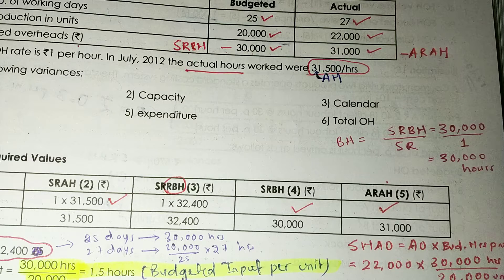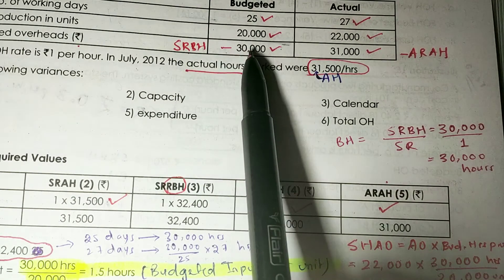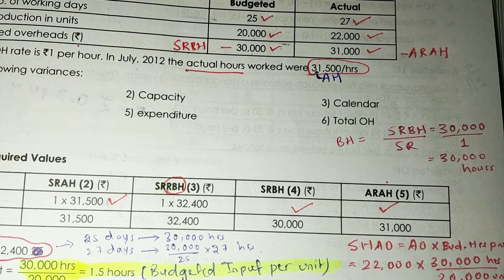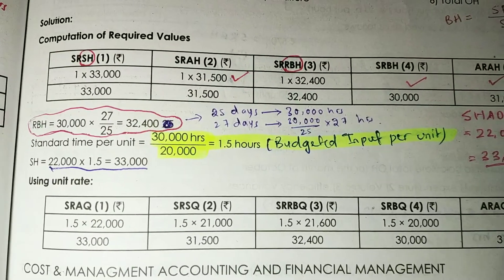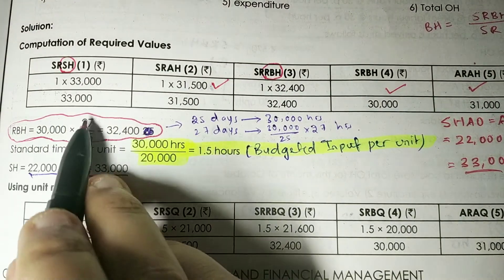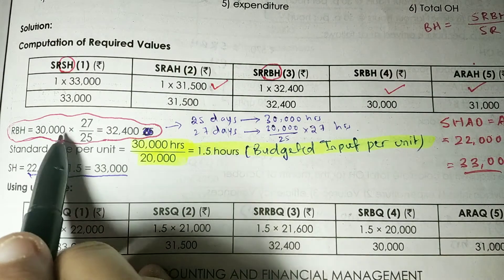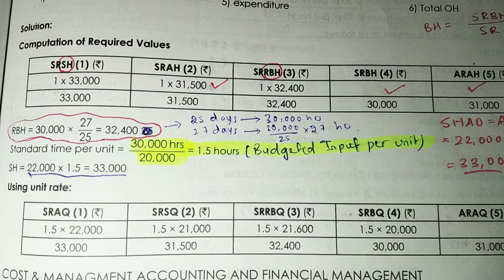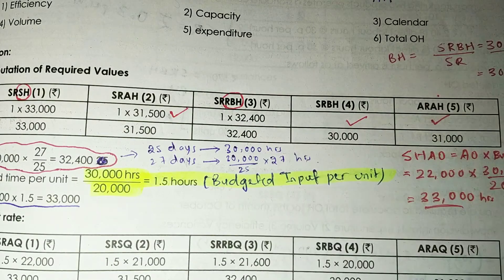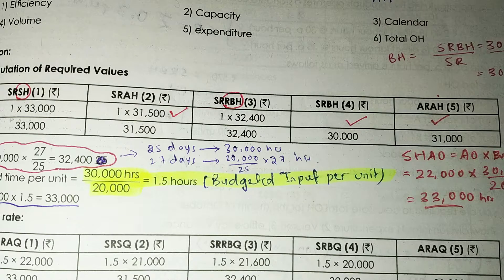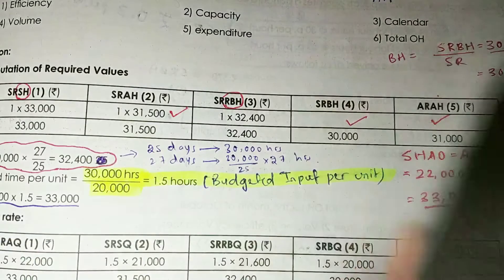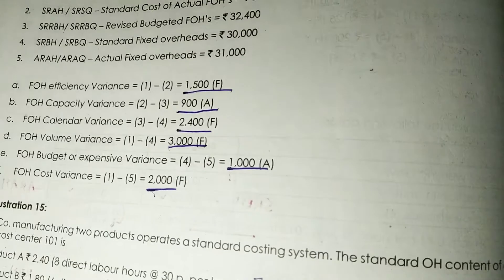Now for revised budgeted hours (RBH): take the total budgeted hours and apportion them in the ratio of actual days to budgeted days. RBH = 30,000 × 27/25 = 32,400 hours. From this you can calculate SR × RBH and then compute all the variances being asked in the question.